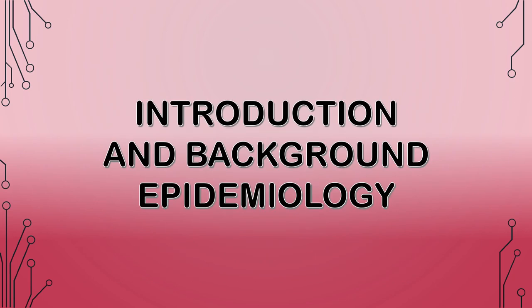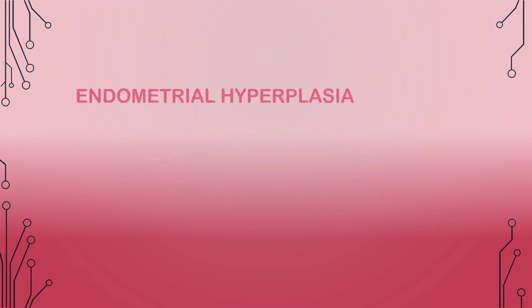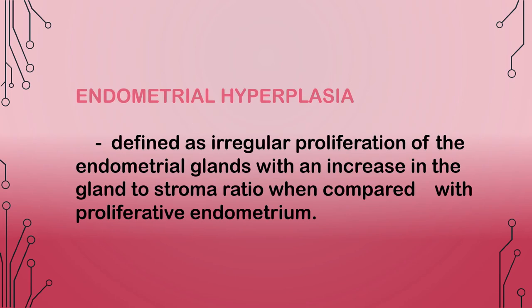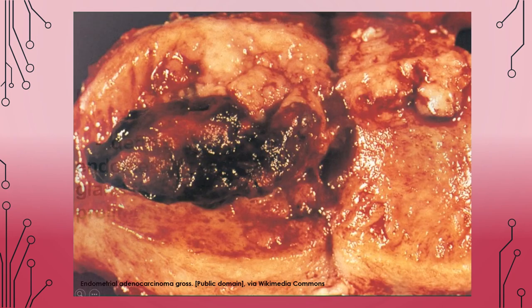Introduction and Background. Epidemiology: Endometrial hyperplasia is defined as irregular proliferation of the endometrial glands with an increase in the gland to stroma ratio when compared with proliferative endometrium. Endometrial cancer is the most common gynecological malignancy in the Western world and endometrial hyperplasia is its precursor. The incidence of endometrial hyperplasia is estimated to be at least 3 times higher than endometrial cancer and if left untreated, it can progress to cancer.